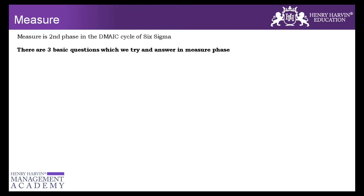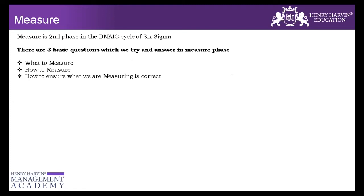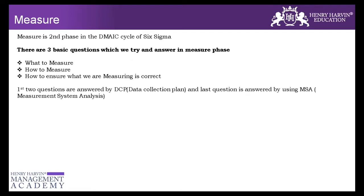There are three basic questions we should answer in the Measure phase: first, what to measure; second, how to measure; and third, how to ensure what we are measuring is correct. The first two questions — what to measure and how to measure — are answered by the data collection plan. The third question — how to ensure — is answered by MSA.